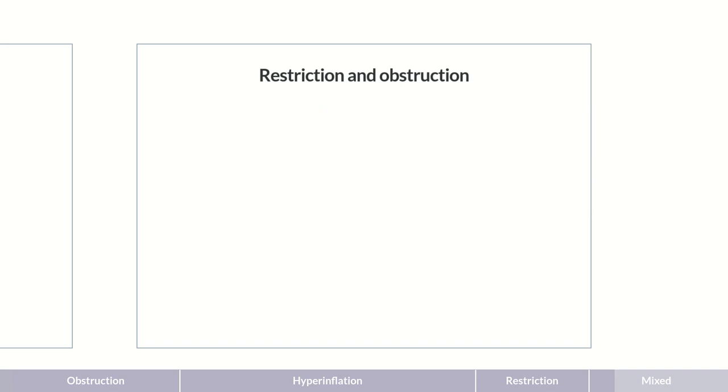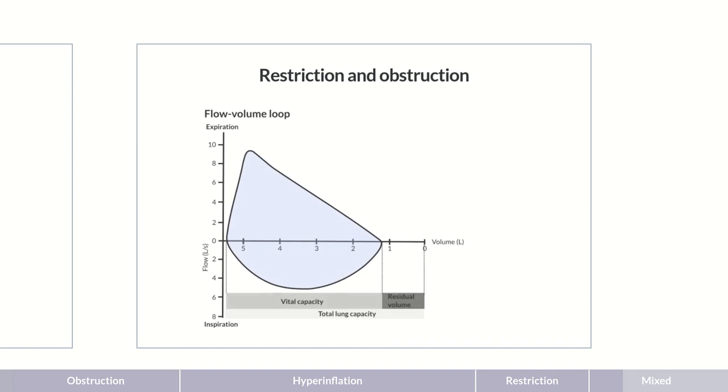Well, in this case, the most obvious answer is the correct one. We need to combine the individual findings just discussed. For this, you can apply your newly acquired knowledge. As a reference, we'll first show you the physiological loop. If you like, you can pause the video and think about the flow-volume loop for a mixed ventilatory defect.